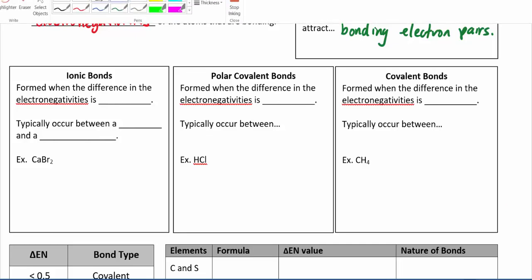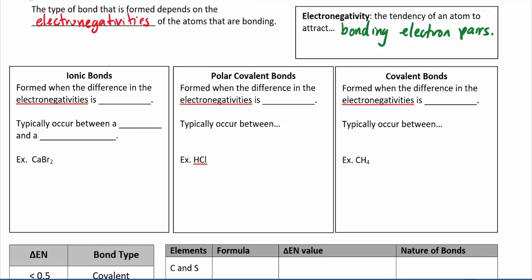We've been talking about ionic and covalent bonds as if they're the only two options, but what we never really mentioned is that this is really a continuum. You sit somewhere on a scale — you might be on the left in an ionic bond, way over on the right in a covalent bond, or somewhere in the middle. Ionic bonds occur when the electronegativity difference between two atoms is large — specifically, greater than 1.6 on that electronegativity scale — and these typically occur between a metal and a nonmetal.